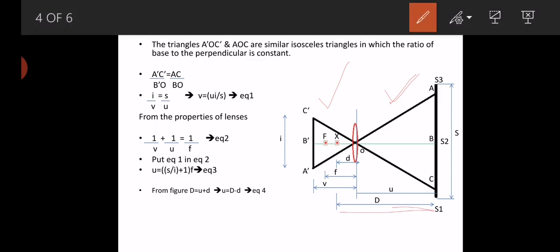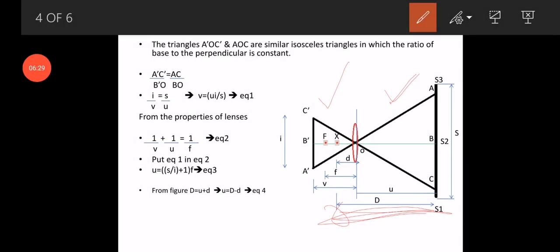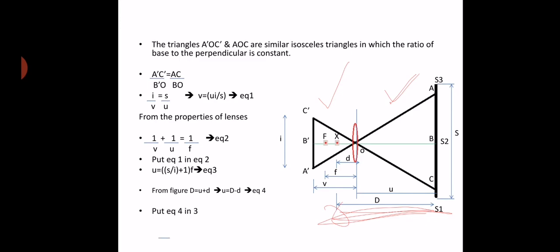Substituting equation 4 into equation 3 and solving gives the distance between two points: D = (f/i) × S + f + d. Here, f/i is the multiplying constant, because it multiplies the staff intercept S, and (f + d) is the additive constant, because it is added to the result. The multiplying constant f/i is generally equal to 100.